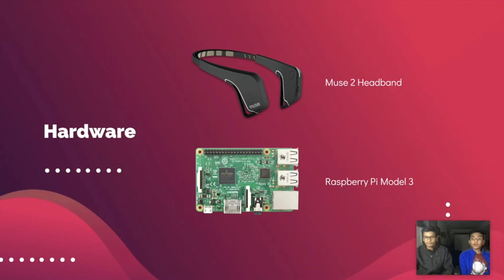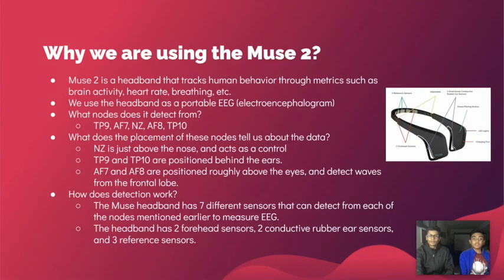Now let's go over the hardware we are using. To actually track the EEG wave bands, we're going to be using a Muse 2 headband. It has different sensors that are able to detect EEG waves. To process the information from the Muse 2 headband, we're going to be using a Raspberry Pi Model 3. The Muse 2 headband is a general audience product used to track human behavior through metrics such as brain activity, heart rate, and breathing.